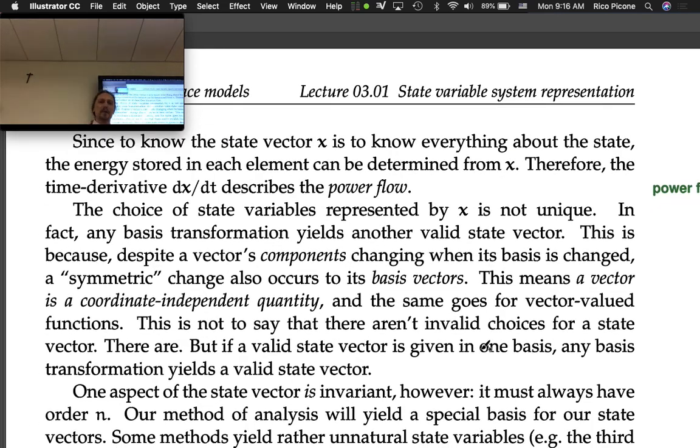The choice of state variables represented by x is not unique. In fact, any basis transformation yields another valid state vector. This is because despite a vector's components changing when its basis is changed, a symmetric change also occurs in its basis vectors. This means a vector is a coordinate-independent quantity, and the same goes for vector-valued functions. There aren't invalid choices for a state vector, but if a valid state vector is given in one basis, any basis transformation yields a valid state vector.